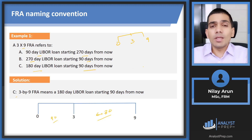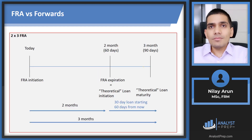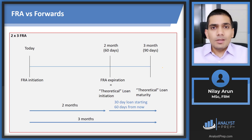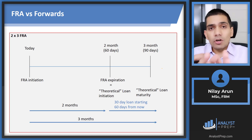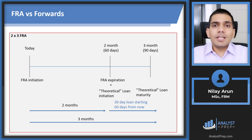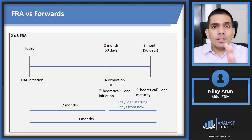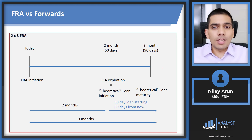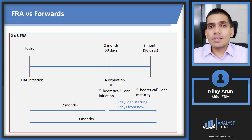That is the FRA naming convention. Now let's compare an FRA to a traditional forward contract. A traditional forward contract is easier to value — it has one formula and the derivative expiry date and underlying expiry date are on the same day. The problem with an FRA is that there are two dates to account for, and that's where the confusion arises. Let's look at a 2×3 FRA example.